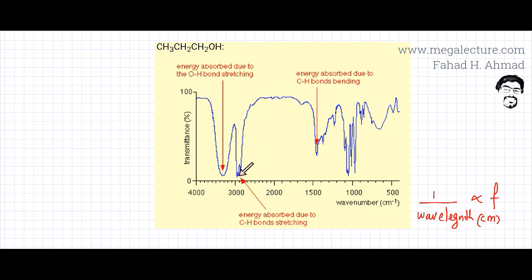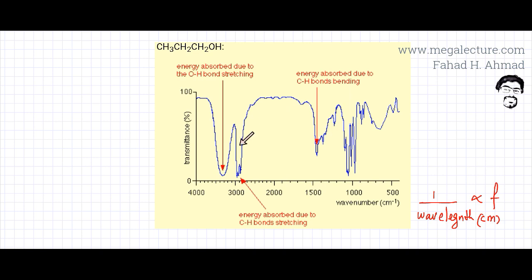If the transmittance falls to almost 0%, that means those frequencies have been absorbed. For example, you would notice there's an absorption at around 2,900, there's an absorption around 3,300, and there's another weak absorption at around 1,500 wave number. You need to ignore where frequencies are not absorbed — they are 100% transmitted — and just focus on the frequencies that have been absorbed.